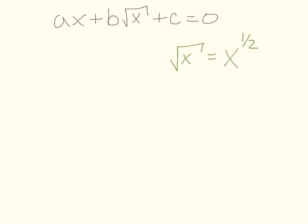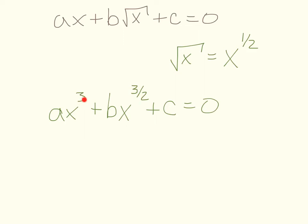There are a lot of different ways quadratic form could show up. For example, ax to the third plus bx to the three halves plus c equals zero is quadratic form, because the middle term's exponent is half of the first term's, and there's no variable in the third term. If that situation occurs, it's very easy to solve, and we're going to do a couple of examples.